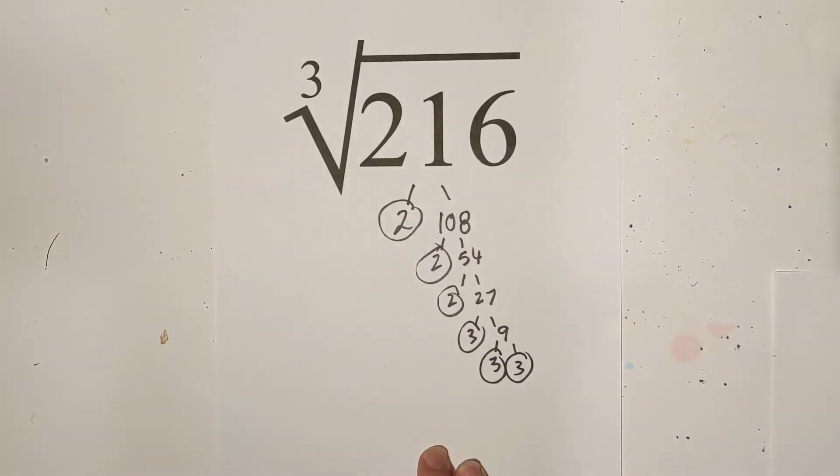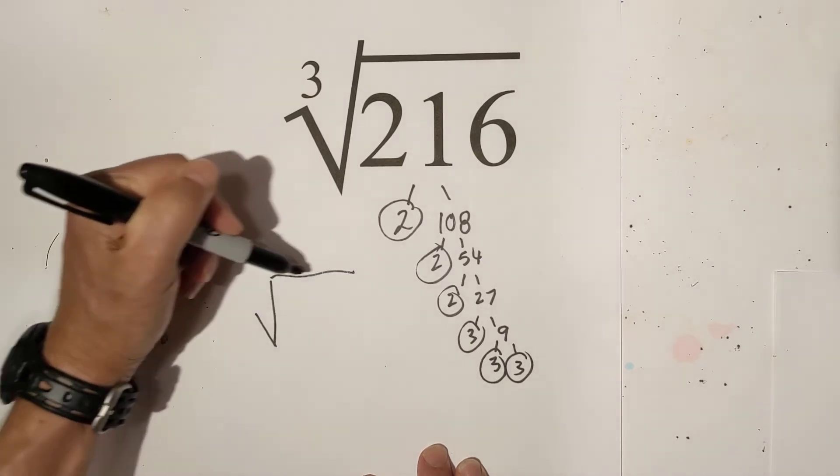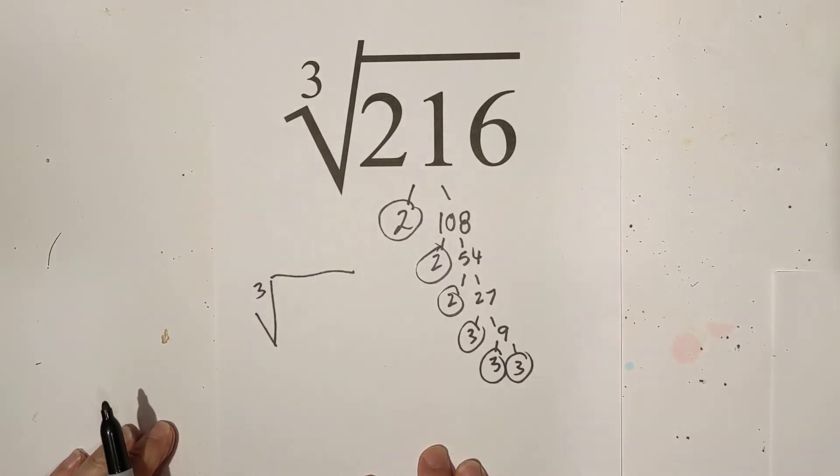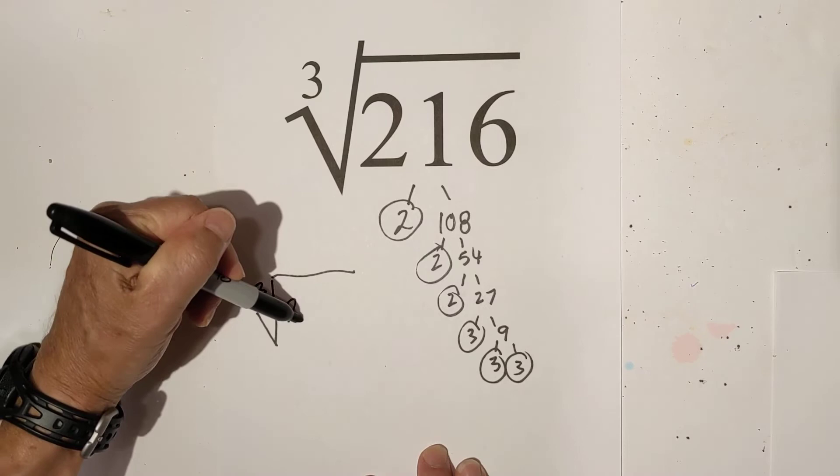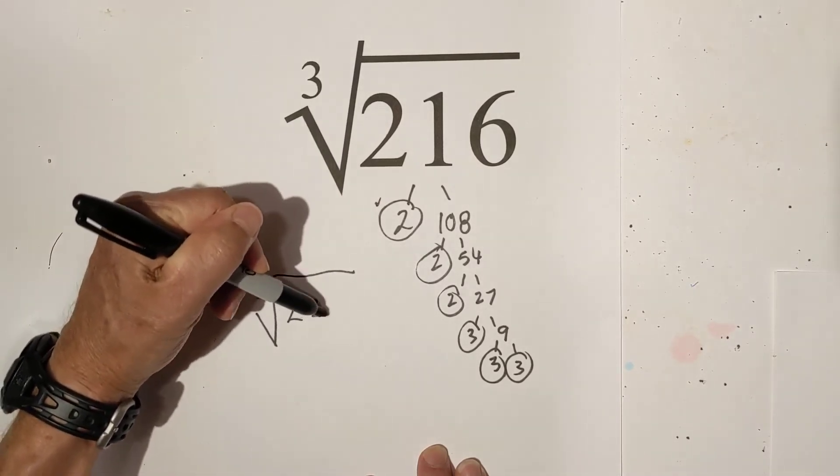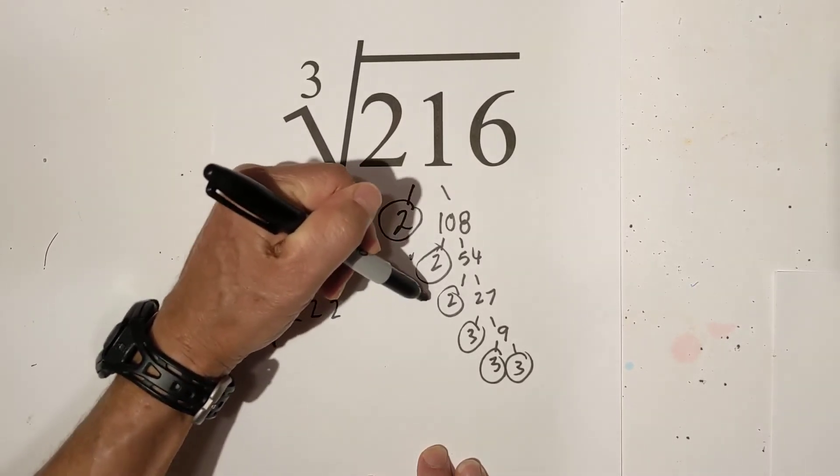I'm going to rewrite the cube root sign and I'm going to place all the numbers underneath it. Let's put a little check by it to make sure that we do not make any mistakes.